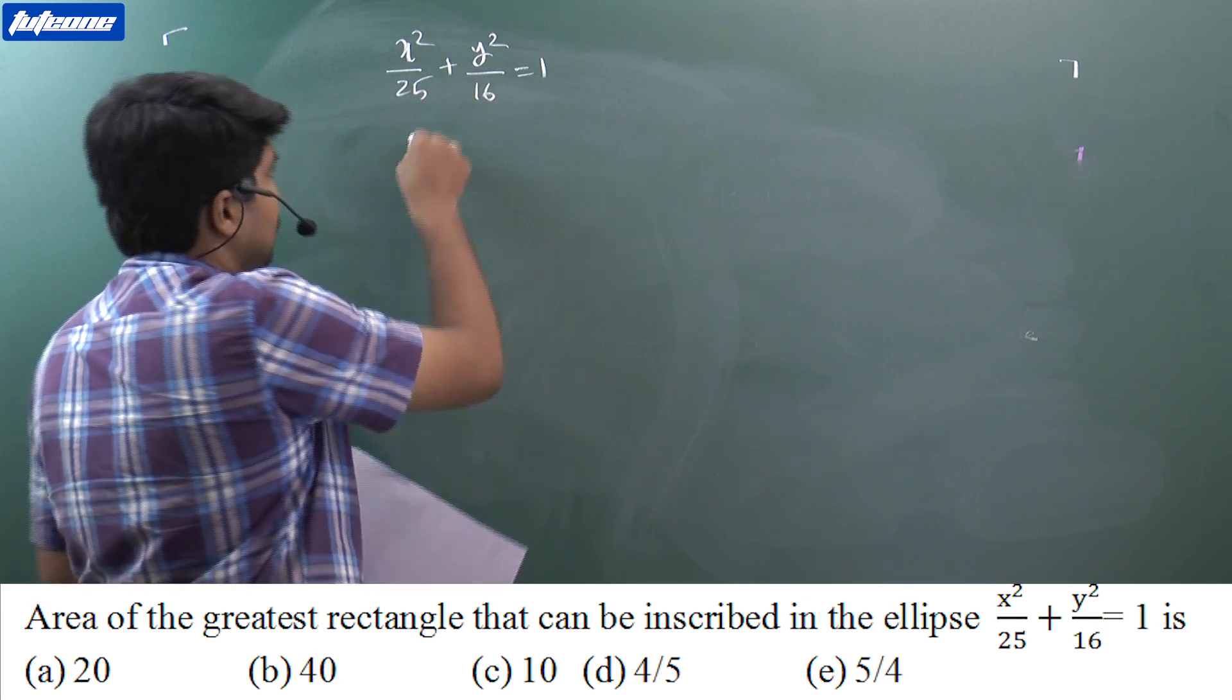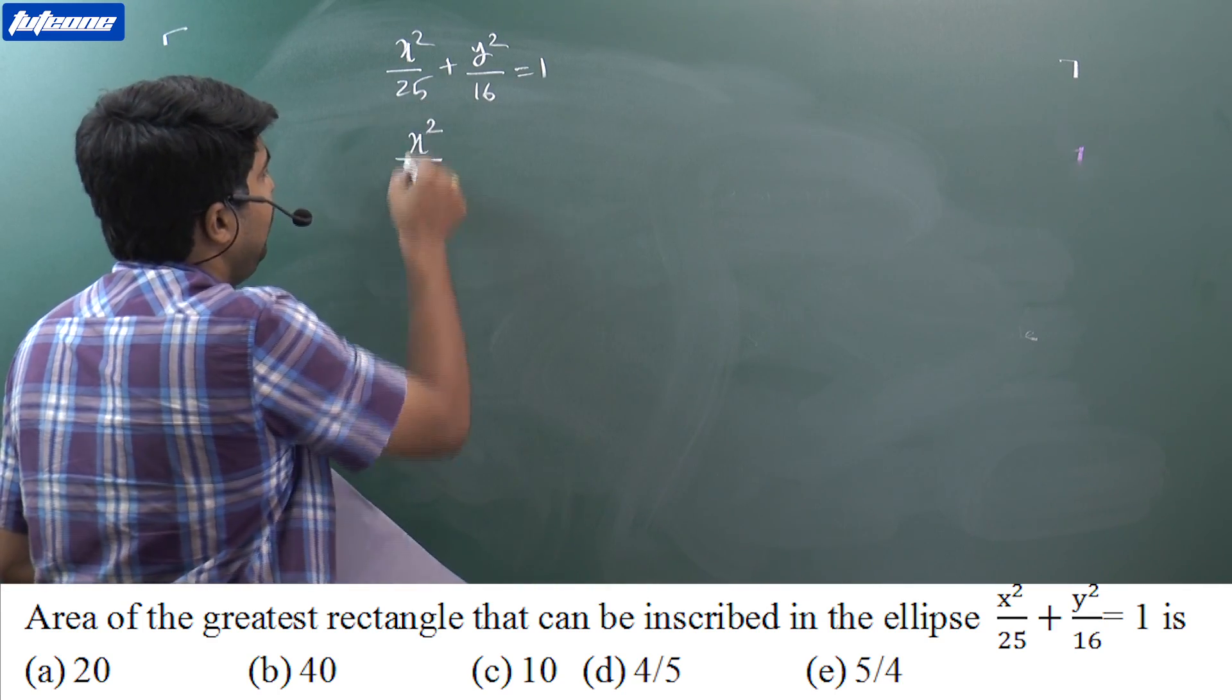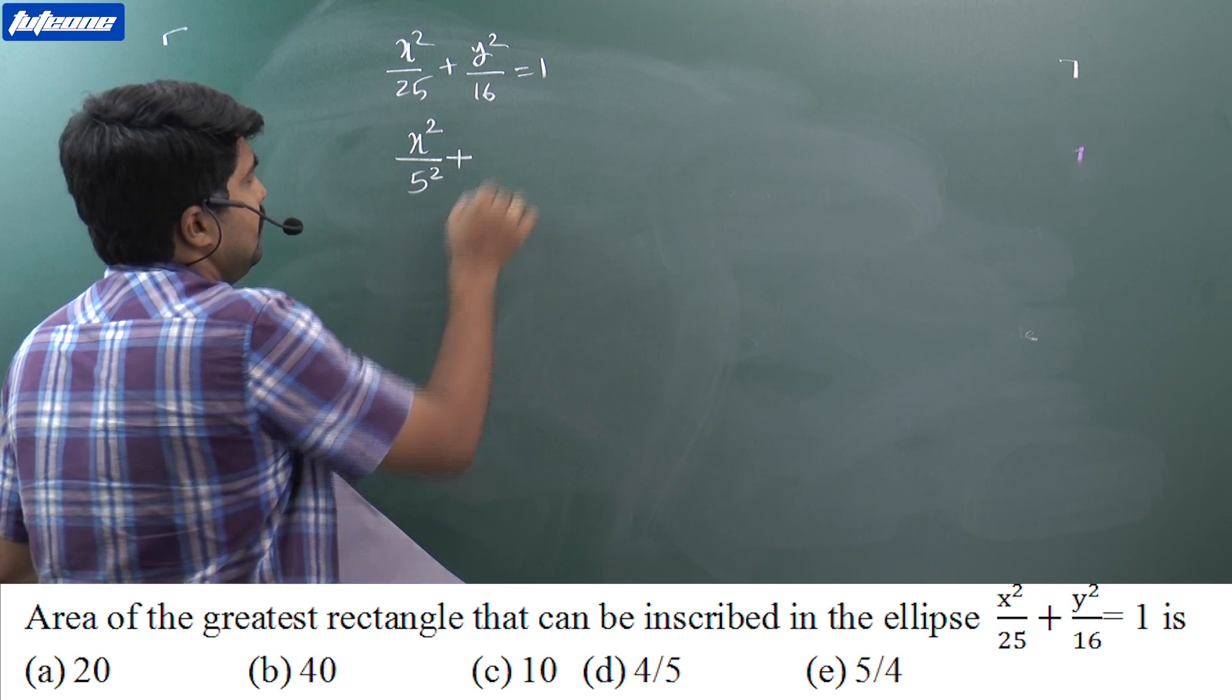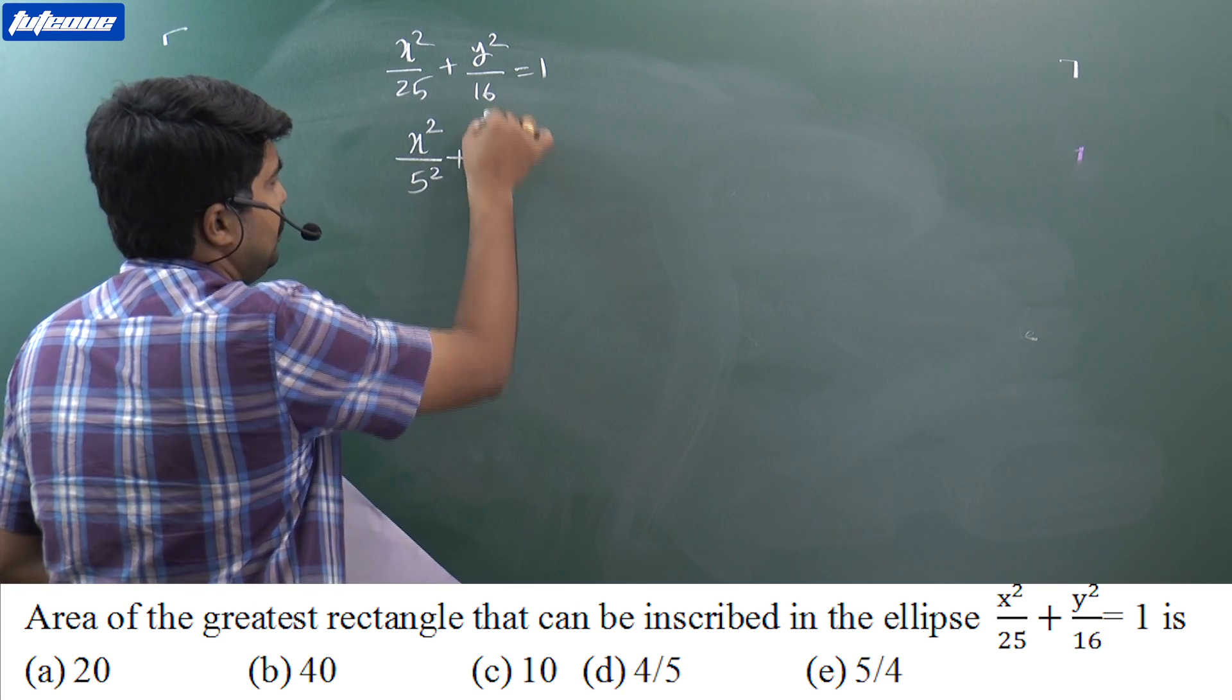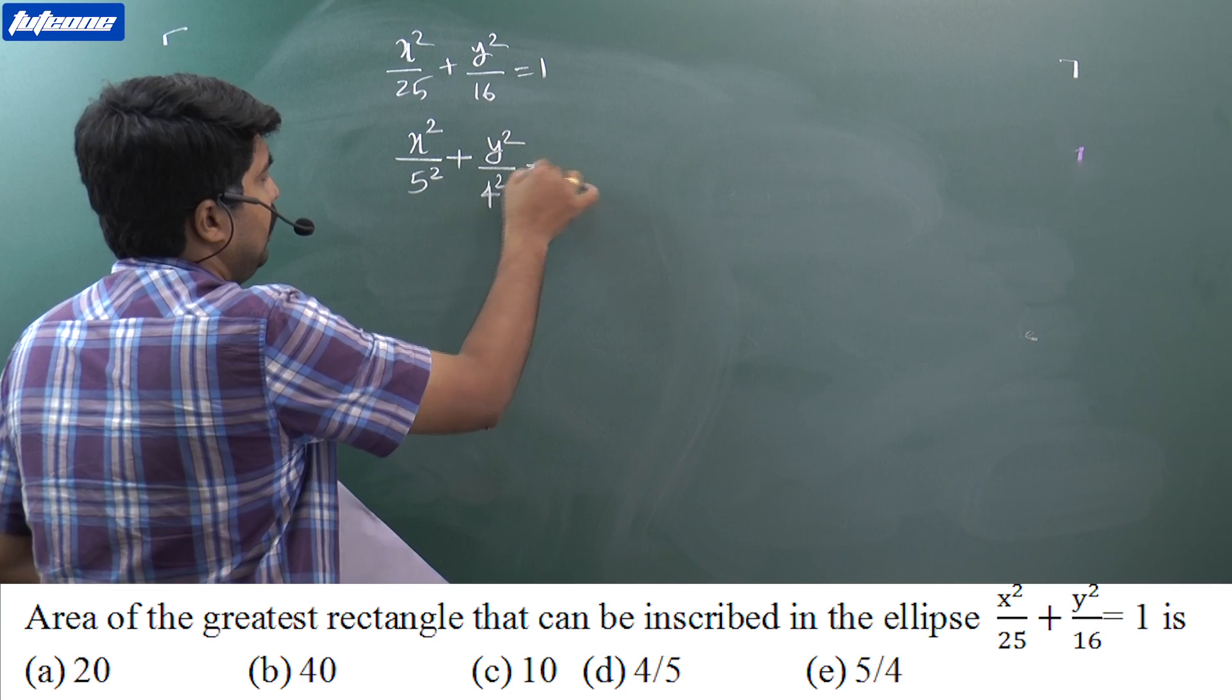It's an ellipse which is x² / 25 = x² / 5² plus y² / 16 = y² / 4² equal to 1.